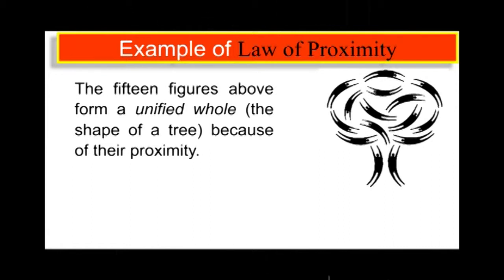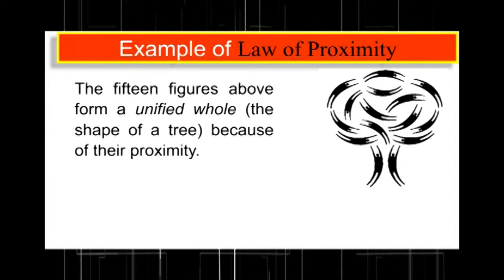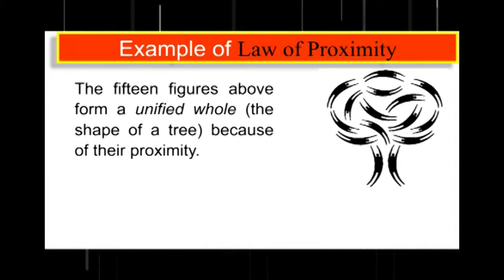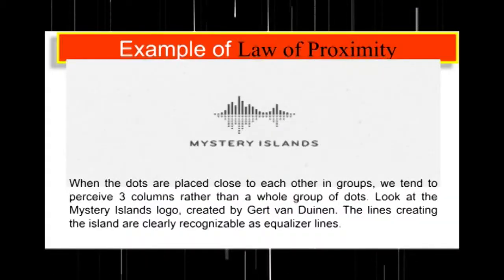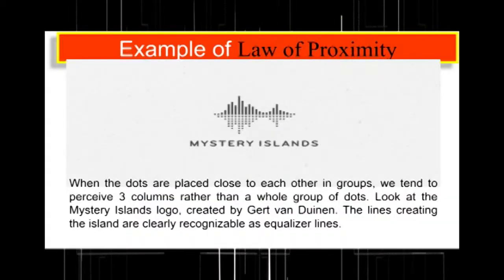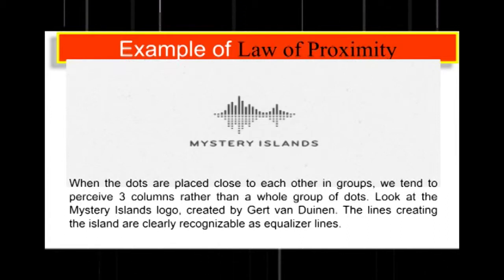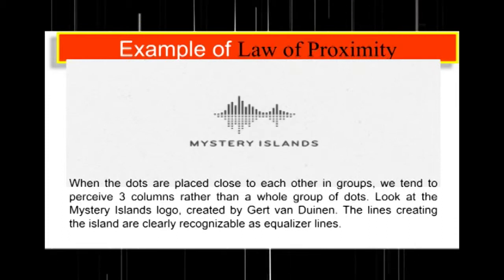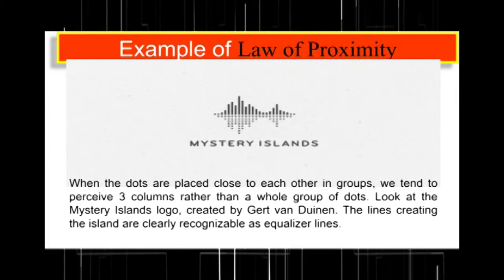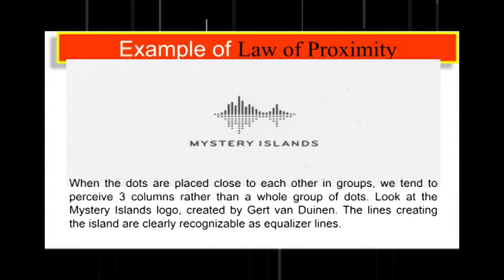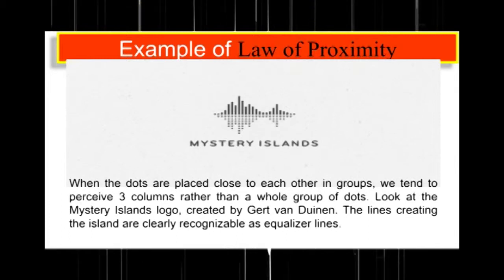As you can see in this image, there are fifteen figures of human beings, but if you see from a distance this looks like a tree. Another example: in the Mystery Islands logo, when the dots are placed close to each other in groups, we tend to perceive three columns rather than a whole group of dots. Looking at the Mystery Islands logo created by Gert van Duren, the lines creating the islands are clearly recognizable as equalizer lines.